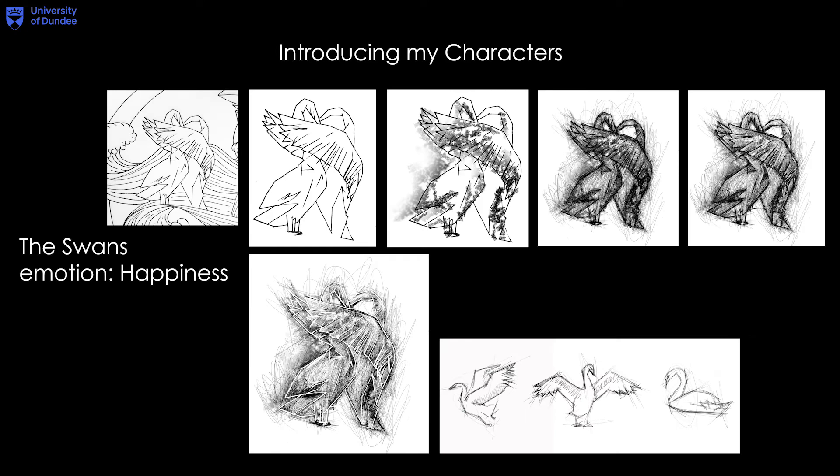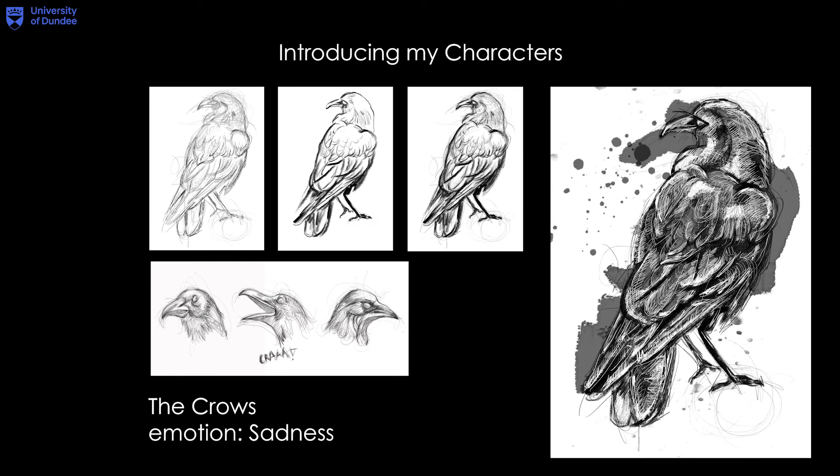Introducing my characters. I have connected each character to one of the six emotions. The swans represent happiness, and because we are talking about happiness I decided to keep the color palette white. I managed to complete my assets and key poses of the swans to create movement in my final video. The crows, in contrast to the swans, are creatures that symbolize death. Designed to represent sadness, I kept the color palette totally black in order to make the contrast between life and death — happiness and sadness — more noticeable.